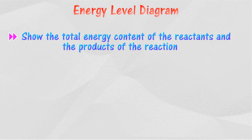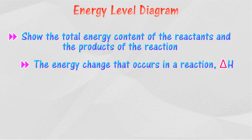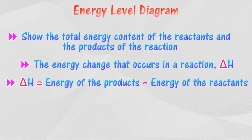The energy level diagram is a graph that shows the energy change of a chemical reaction. It shows the energy content of the reactants and products of a reaction. The energy change that occurs in a reaction depends on the energy content within the reactants and its products. Energy change can be represented by the symbol Delta H — the difference between the energy content of the reactants and the energy content of the products.